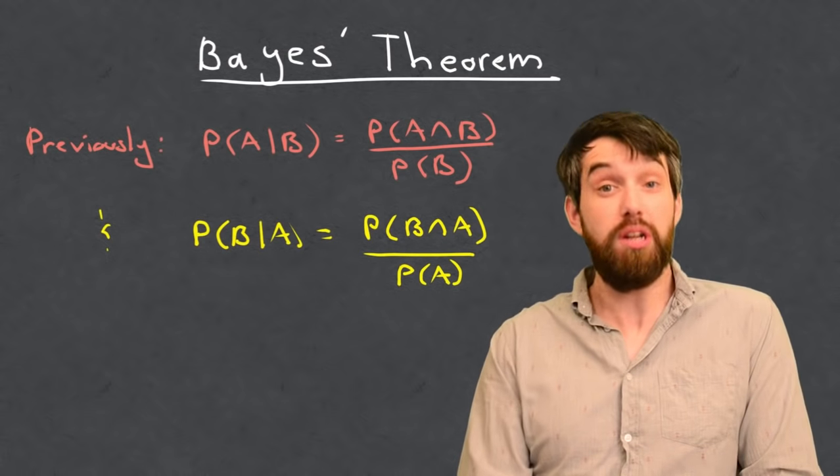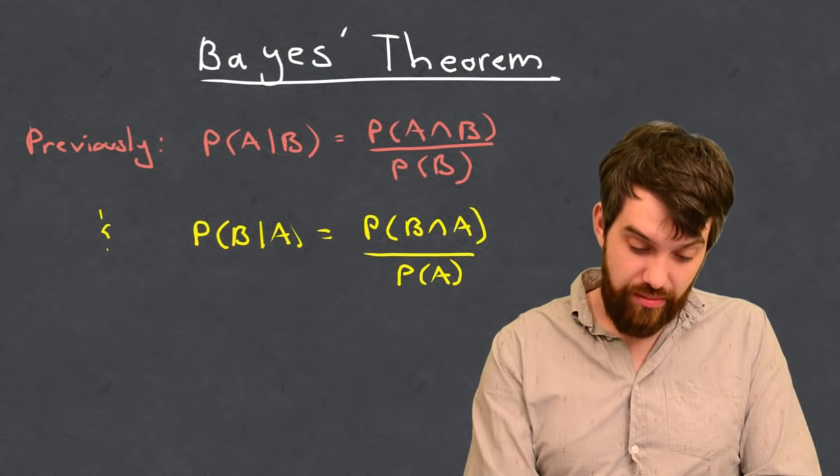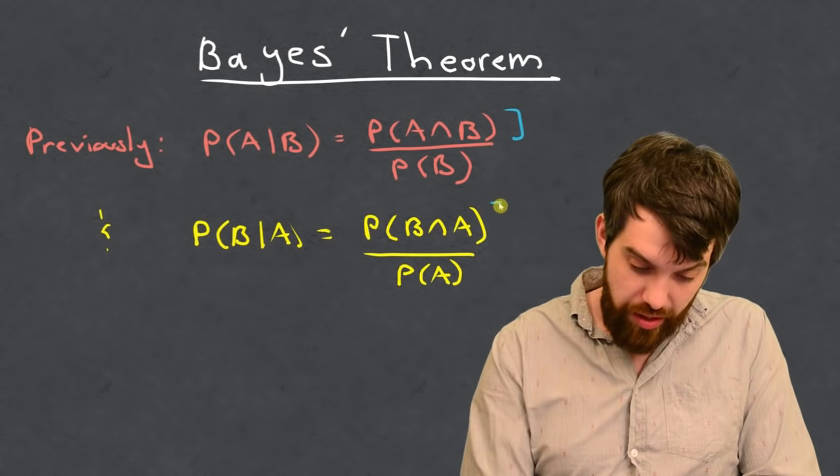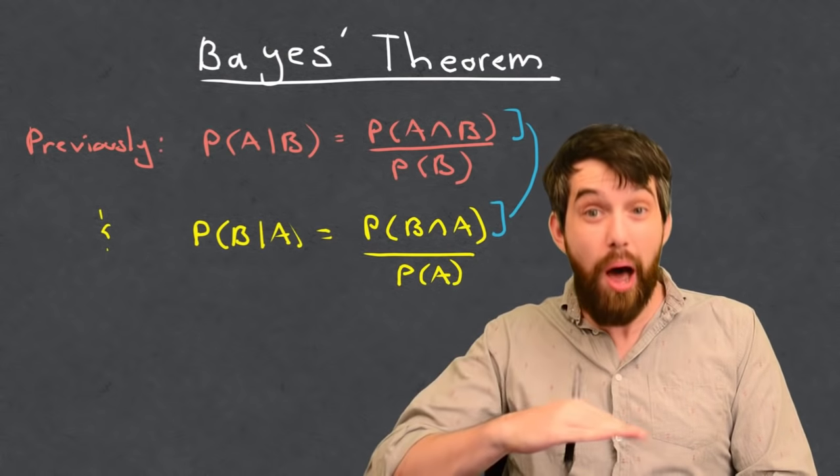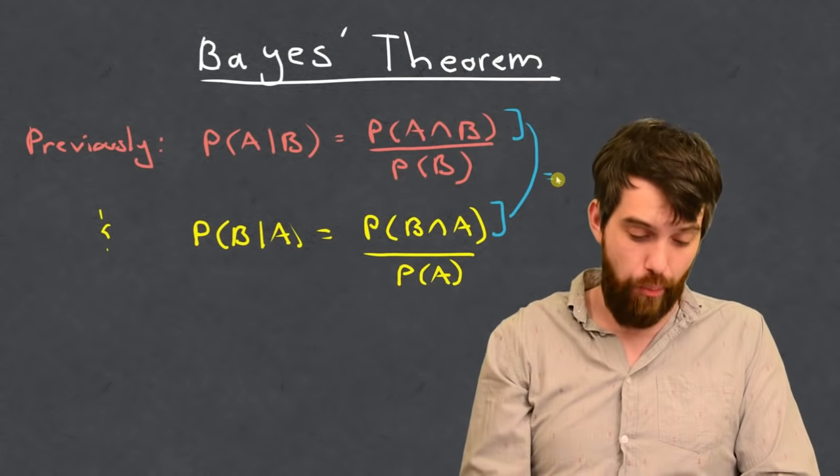And then now it's all divided out by the probability of A. So, we have these two different components, and you'll notice that there's this portion, the numerator, that these two things are indeed going to be equal. So, I can take the one, the bottom one, and I can substitute it into the top one.